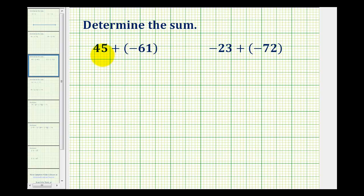Next, because the integers have different signs, meaning one's positive and one's negative, we're going to subtract their absolute values. The absolute value of 45 is 45, and the absolute value of negative 61 is 61.